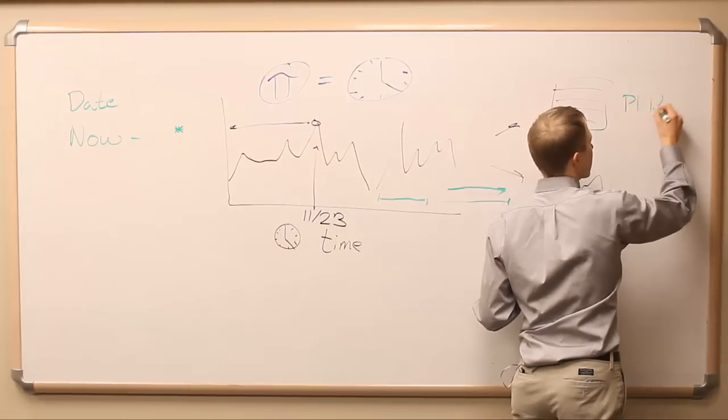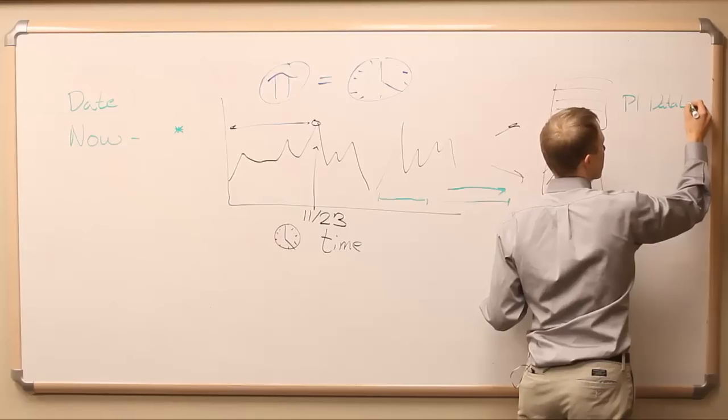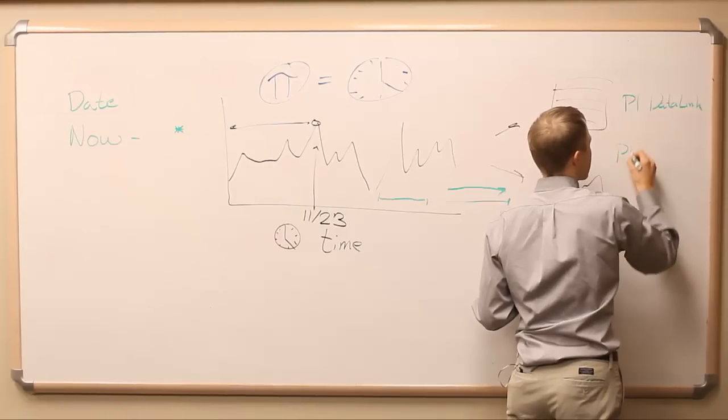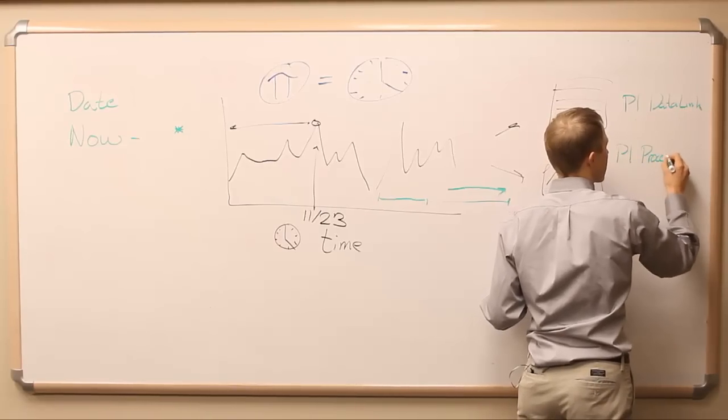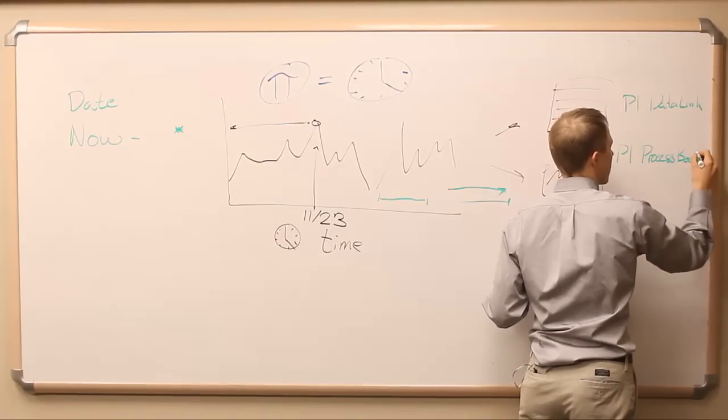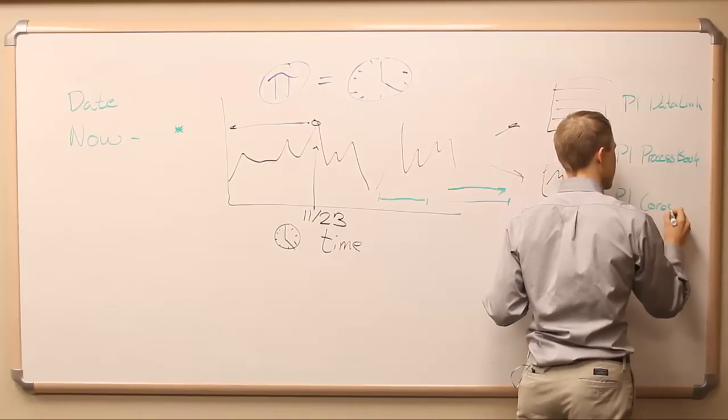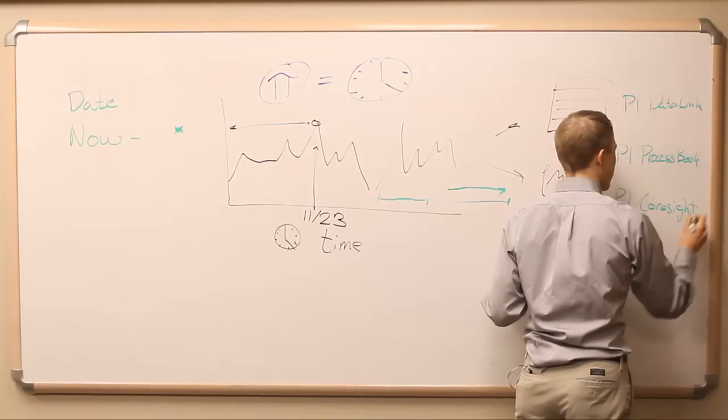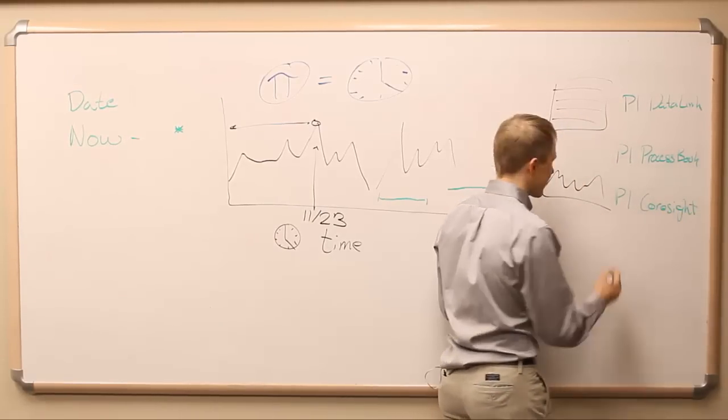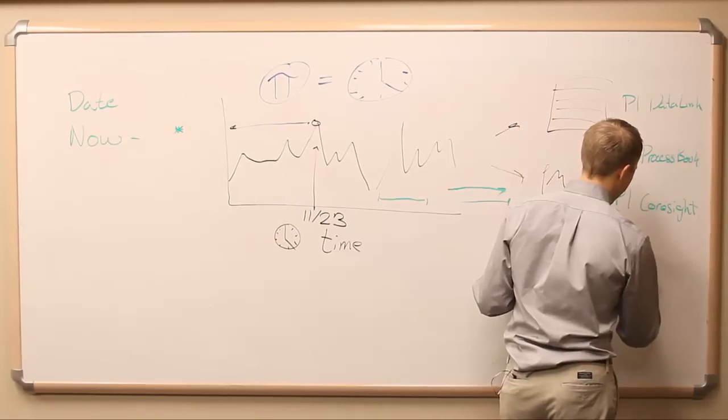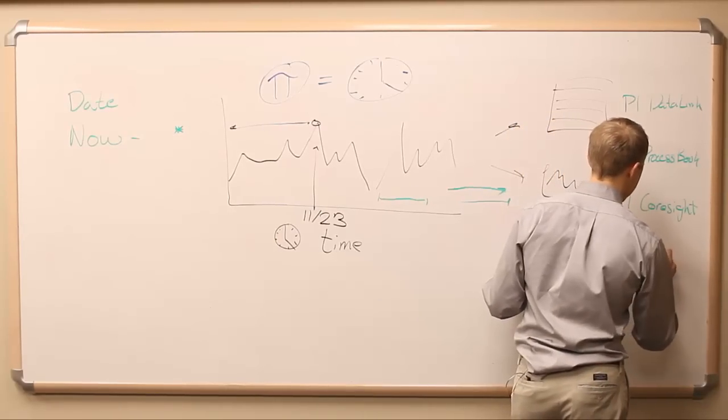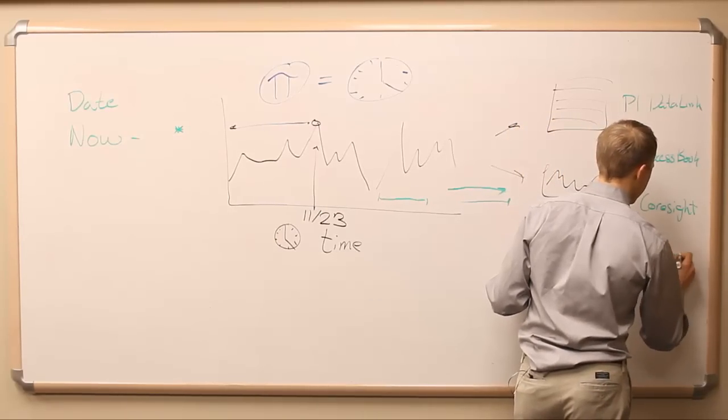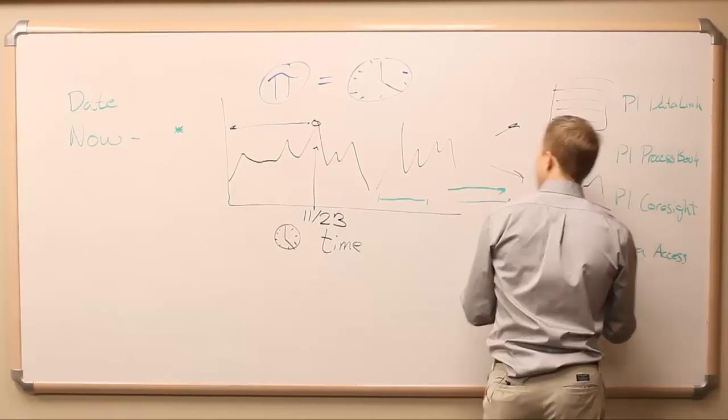So in a number of different pieces of software, like PI Datalink, PI Process Book, PI Coresight, PI Web Parts, PI Data Access, and whenever we're actually asking the server for data, we can usually use something like asterisk to refer to what's going on right now.